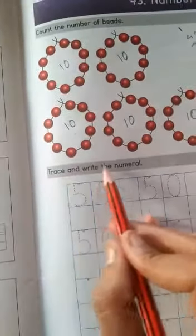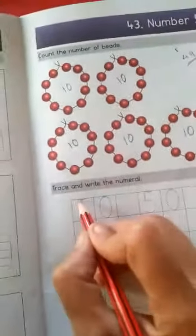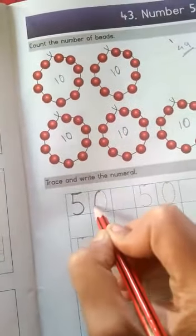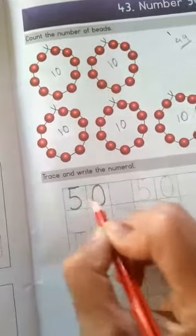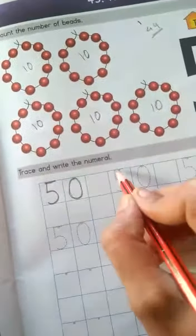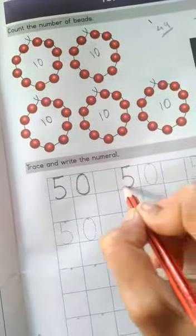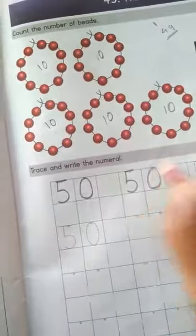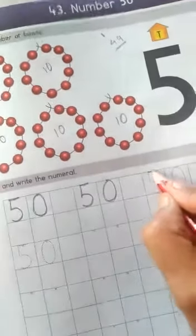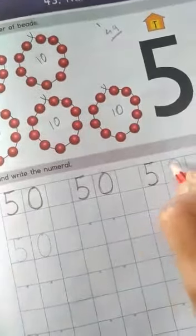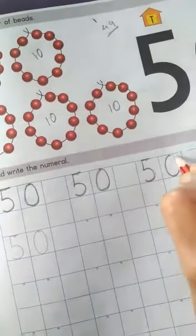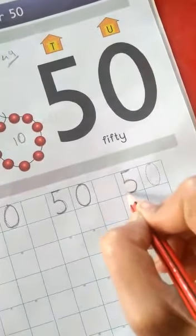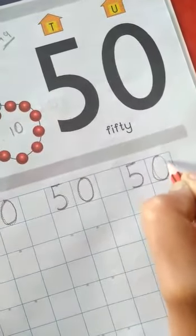Now, come to the next. Trace and write the numeral. First, write here five. Five and zero. Five, zero, fifty. Read it together. Five, zero, fifty. Leave this box and write here. Five, zero, fifty.